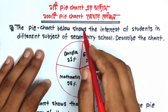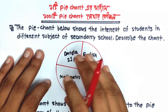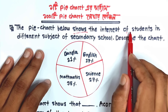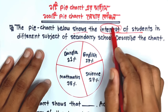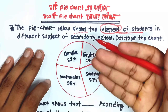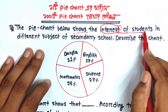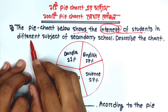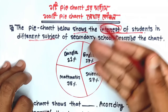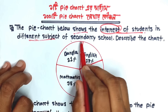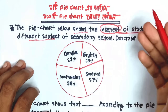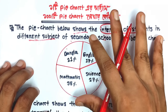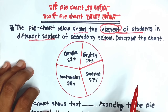The pie chart below shows the interest of students in different subjects of secondary school. So, describe the chart — that means you have to discuss what this chart is showing. Here, the meaning in Bangla is also given. The word 'student' means those who are learners. 'In different subjects' means in various subjects.